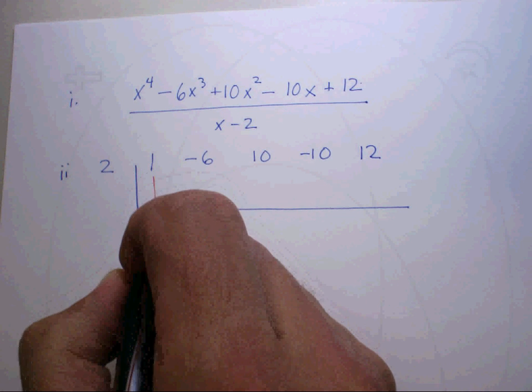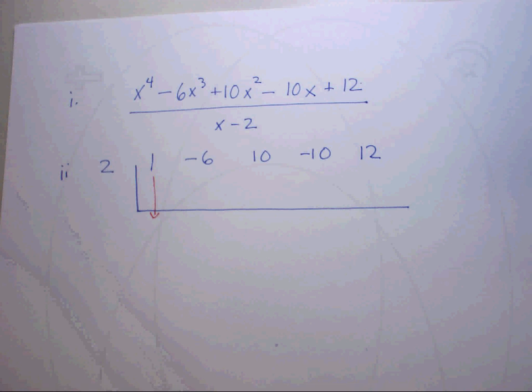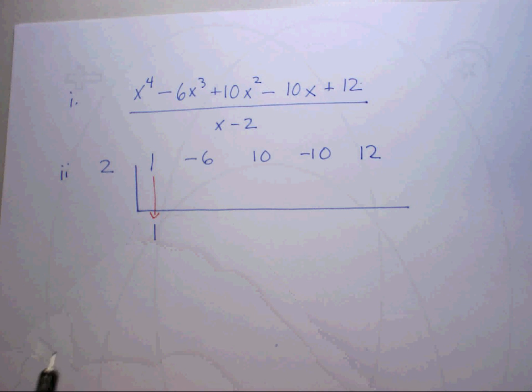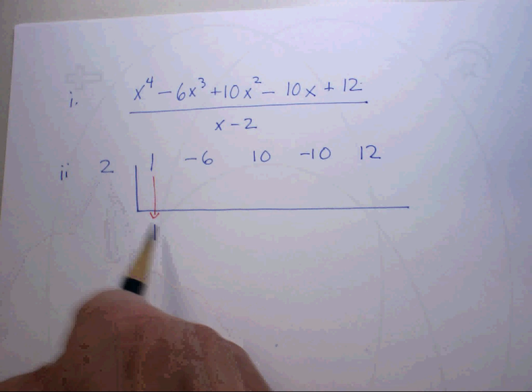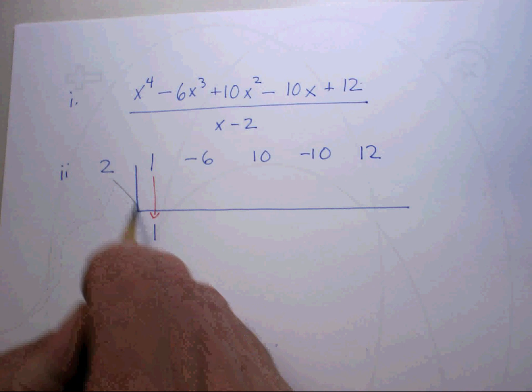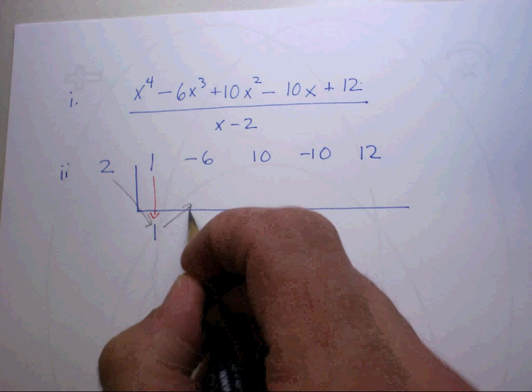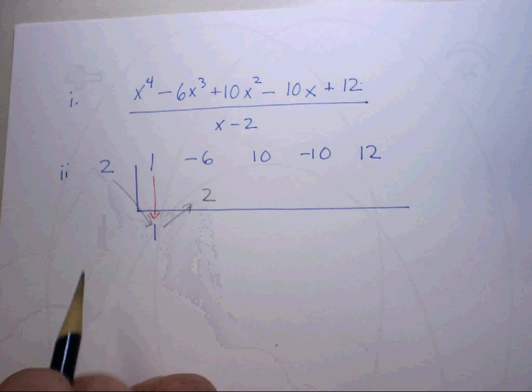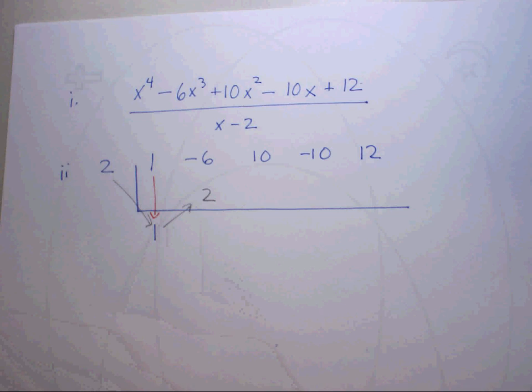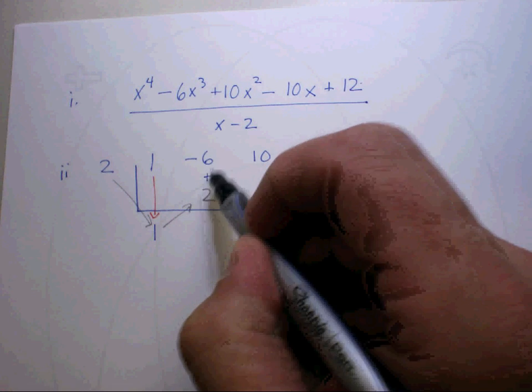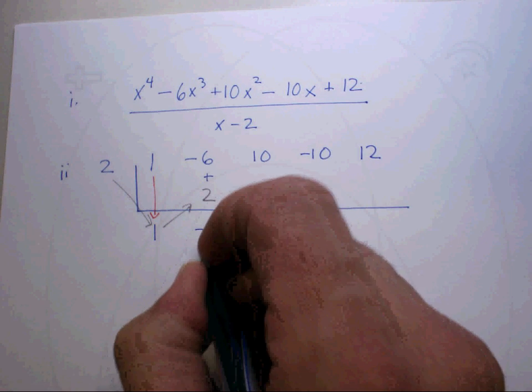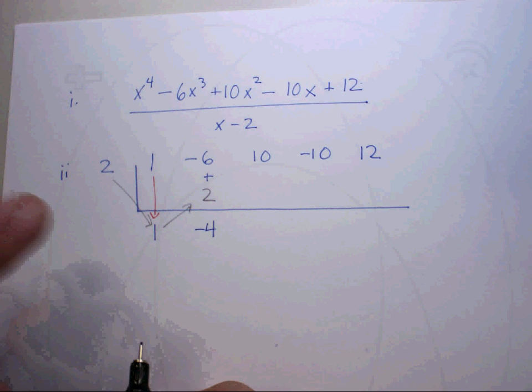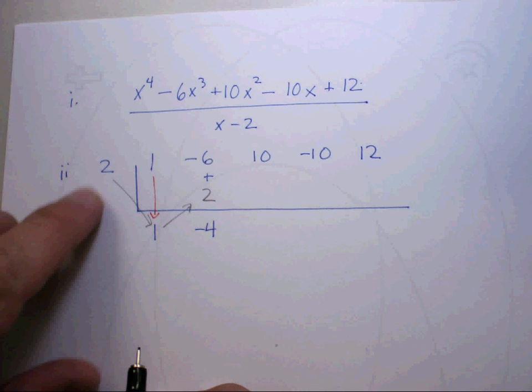The way synthetic division works is that you take the leading term and you simply bring it down and put the 1 there. Then what you're going to do is you're going to take the 2 and multiply it by the 1, and you put the result here. So 2 times 1 is 2. You're then going to add these two numbers and get negative 4.